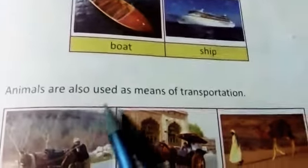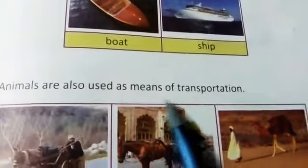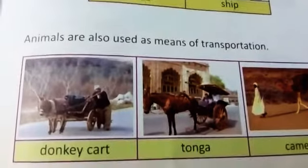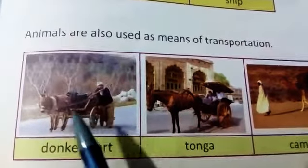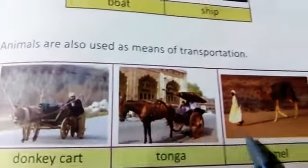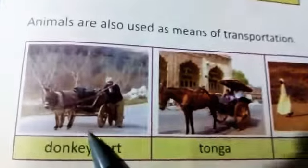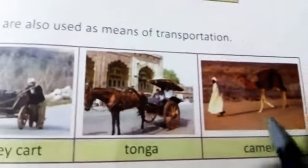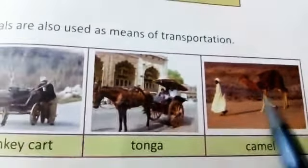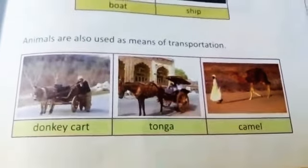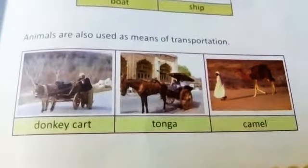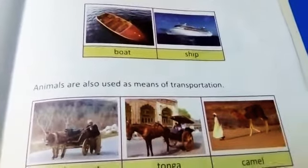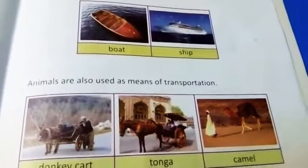Animals are also used as means of transportation. Do you know animals could be means of transportation? Like donkey, horse, camel — look at donkey cart and camel. So students, you have to read page number 50 and 51. Take care, Allah Hafiz.